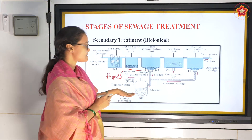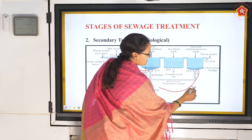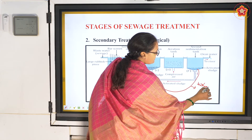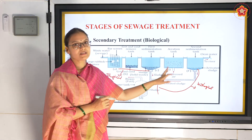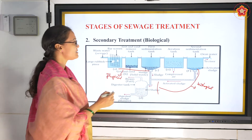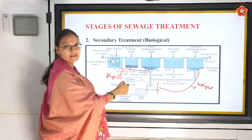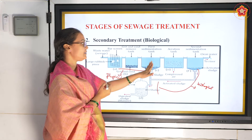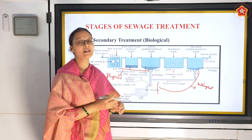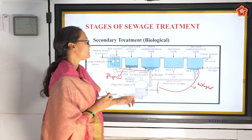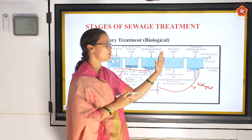From the aeration tank to the digester tank it is the biological part. This is called biological because microbes are added here. After physical removal of debris and grit, the water containing only organic matter - called effluent - is taken into the aeration tank where the biological process, the biological treatment, begins.